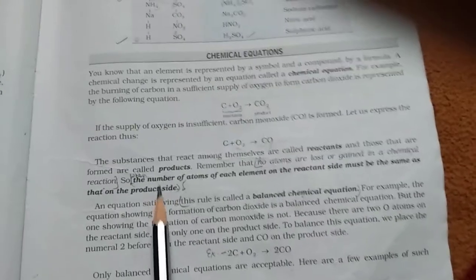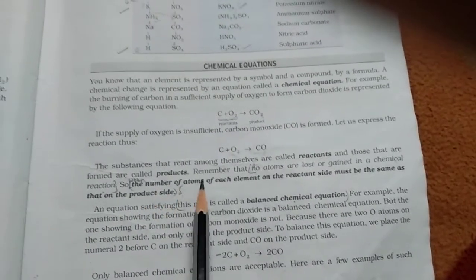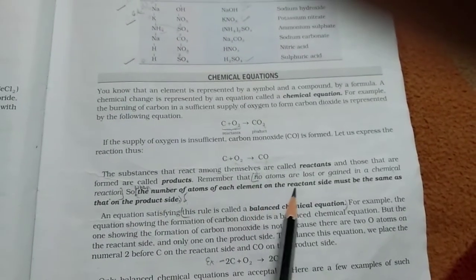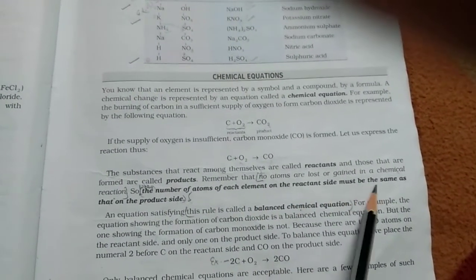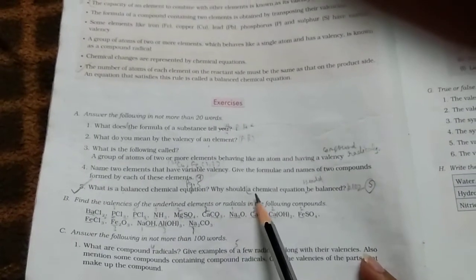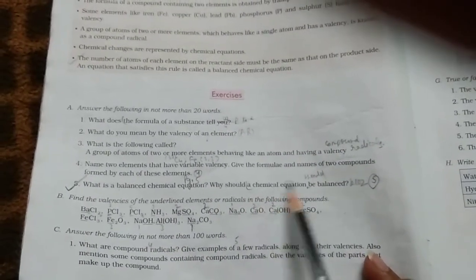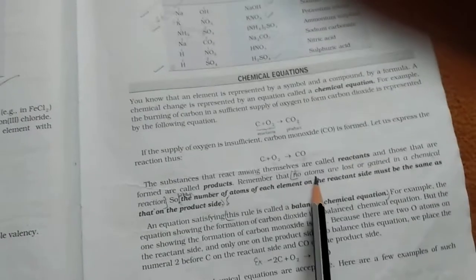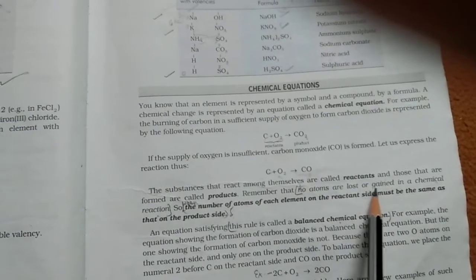Come to page number 5. The answer of A part is, when the number of atoms of each element on the reactant side must be the same as that on the product side. In the answer of B part, first we take from question, a chemical reaction, a chemical reaction should be balanced because no atoms are lost or gained in a chemical reaction.